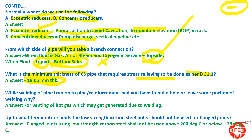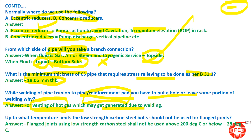While welding a pipe trunnion to a pipe reinforcement pad, why do you put a hole or leave some portion in the welding? When we weld a pipe trunnion with the reinforcement pad, a hole is provided for venting of hot gases which may be generated due to welding. This venting is necessary because the hot gas entrapment may cause uneven heating of the surface and eventually lead to weld failure.